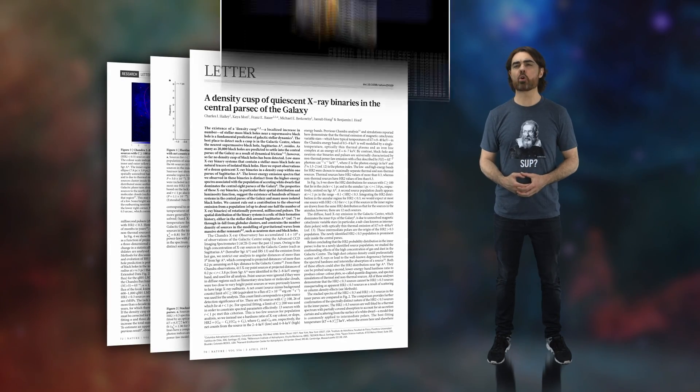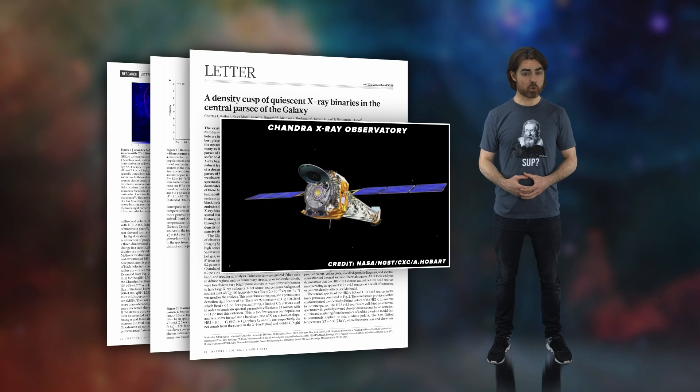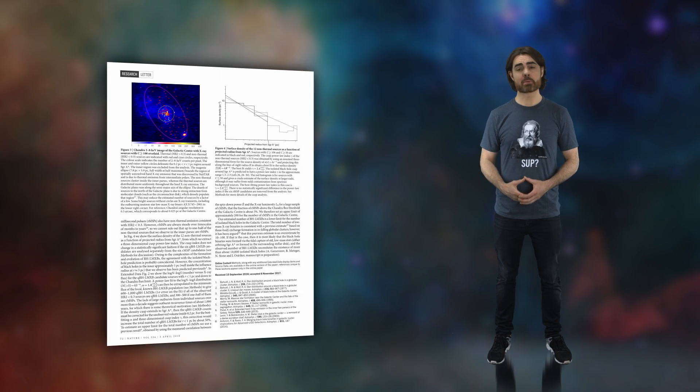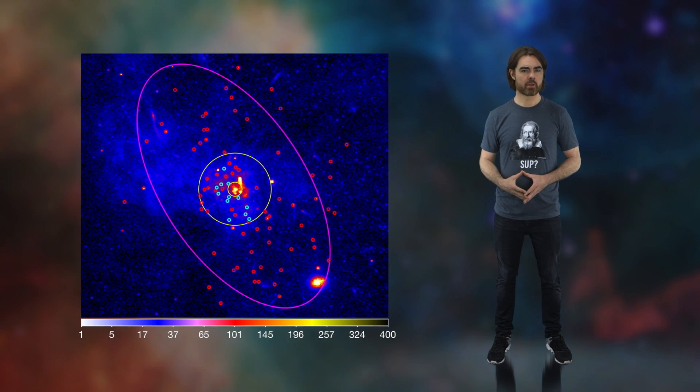These quiescent x-ray binaries should be seen much more frequently than the active ones, frequently enough that if the galactic core is full of black holes, then it should also contain quiescent x-ray binaries. Halley and team used the orbiting Chandra X-ray Observatory to hunt for these. And surprise, surprise, they found them. They spotted 92 point-like x-ray sources within one parsec, or around three light years, of the galactic center. These were potential x-ray binaries, but there are other astrophysical critters that also shine bright in x-rays.